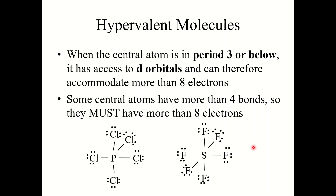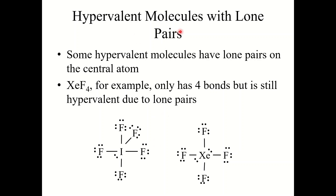Finally, let's look at hypervalent molecules. These are molecules where the central atom is in period three or below, because those atoms have access to d orbitals and can therefore accommodate more than eight electrons. For example, phosphorus pentachloride PCl₅ has phosphorus with ten valence electrons, and sulfur hexafluoride SF₆ has sulfur with twelve. Some hypervalent molecules also have lone pairs: xenon tetrafluoride XeF₄ has only four bonds but is still hypervalent due to lone pairs, and iodine pentafluoride IF₅ has five single bonds plus a lone pair.